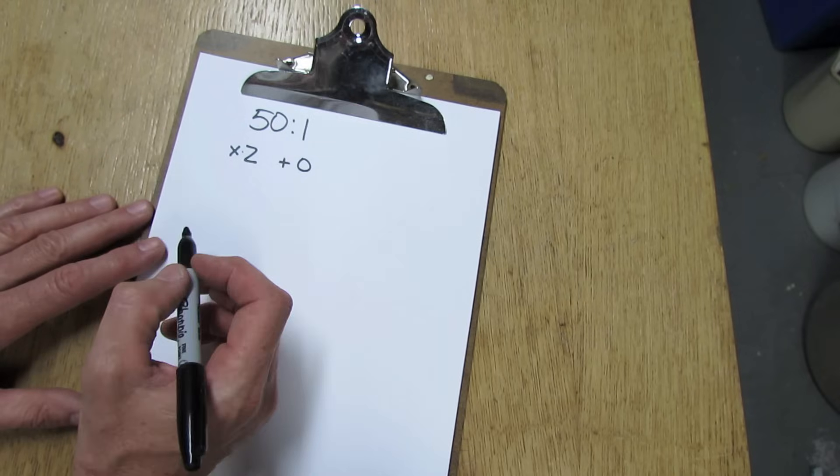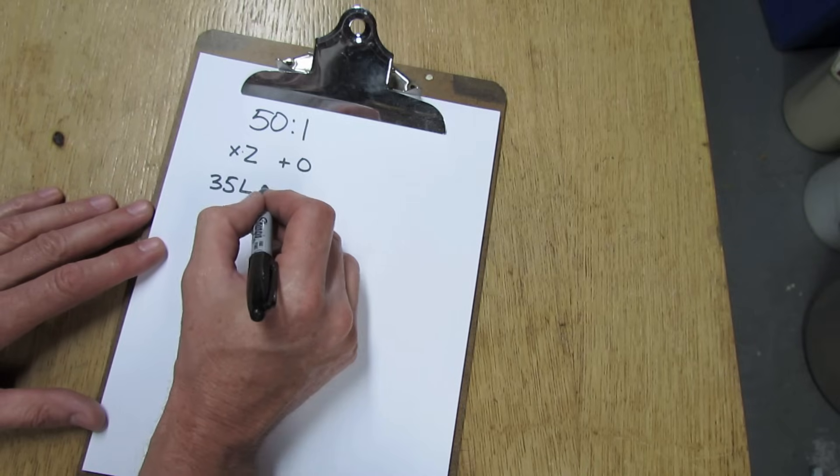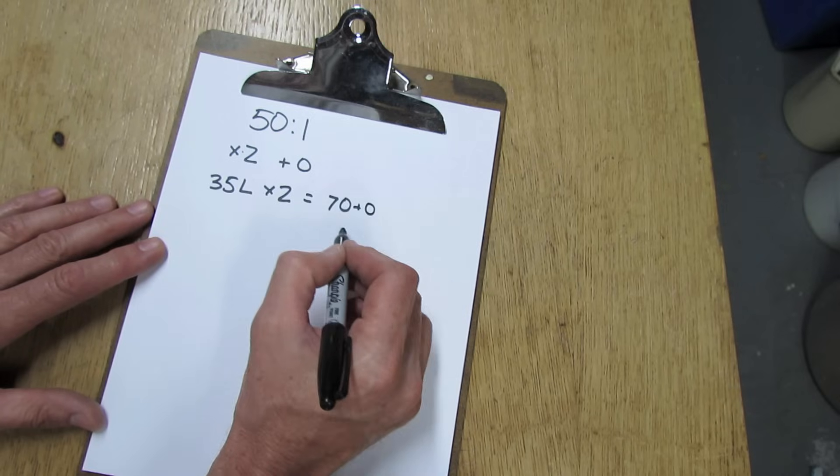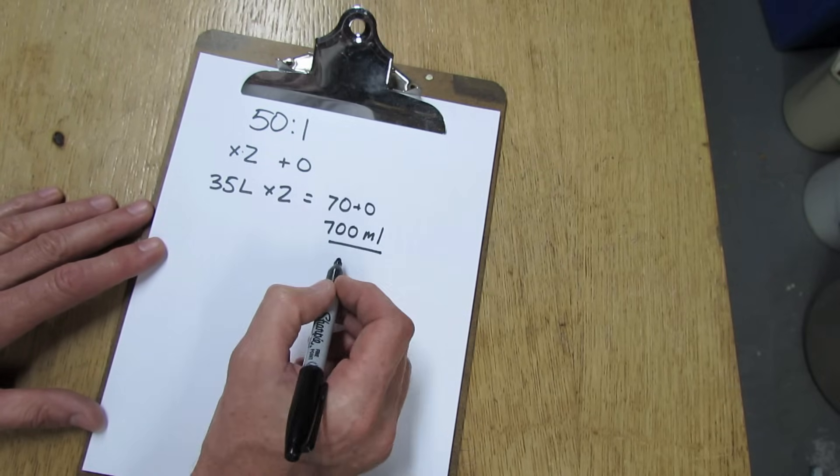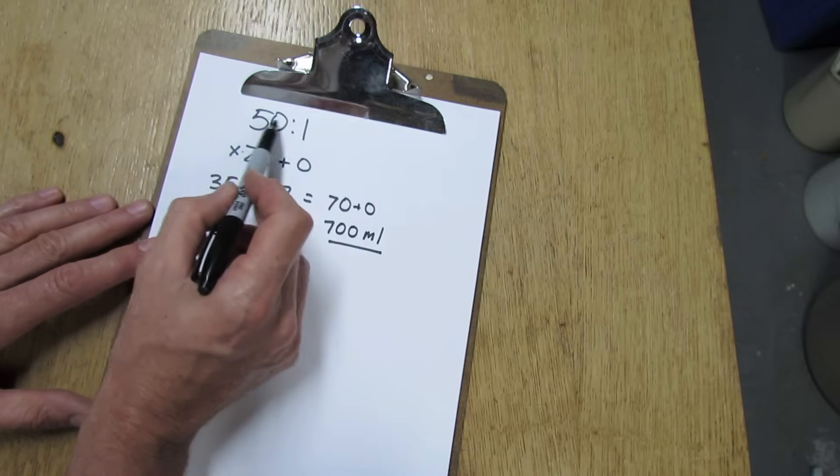So let's use 35 liters as an example. So 35 liters times 2 equals 70 and then just add a 0 to the end and that gives us 700 milliliters. So you want to add 700 milliliters to 35 liters of fuel to get a 50 to 1 ratio.